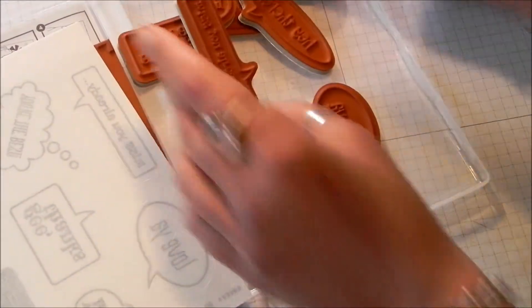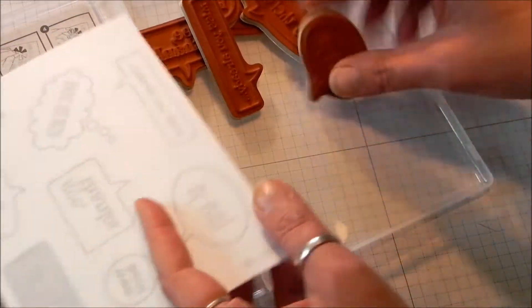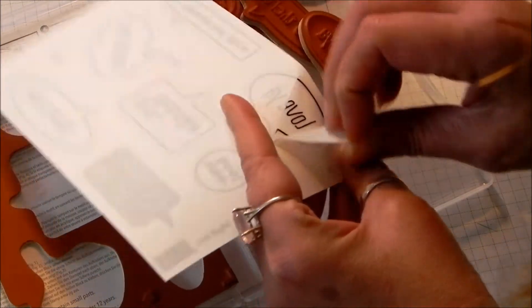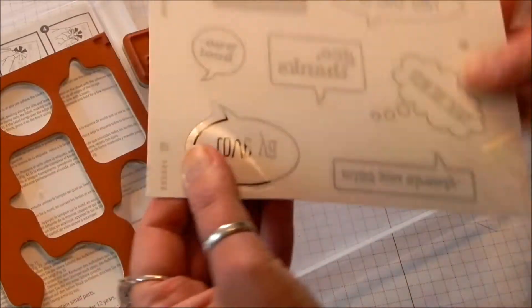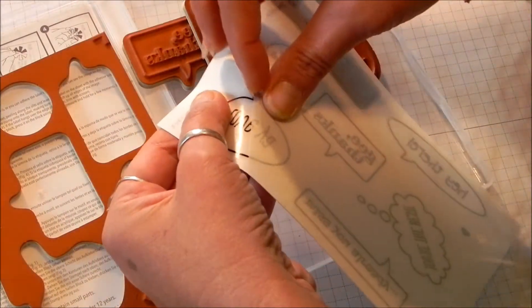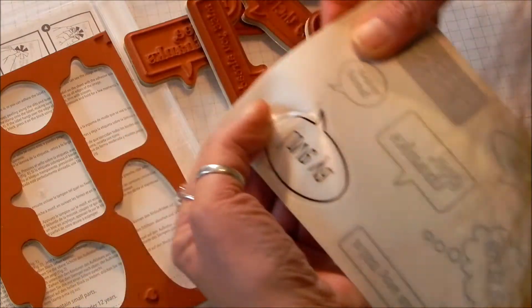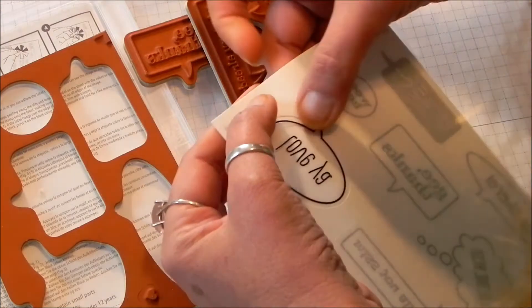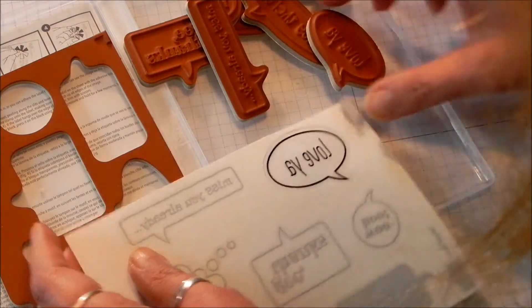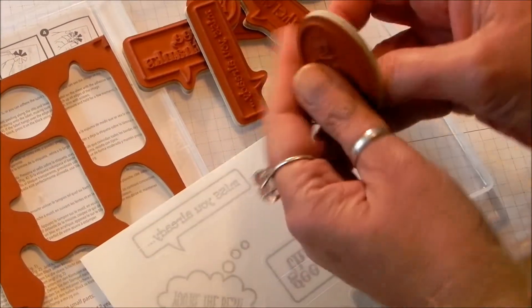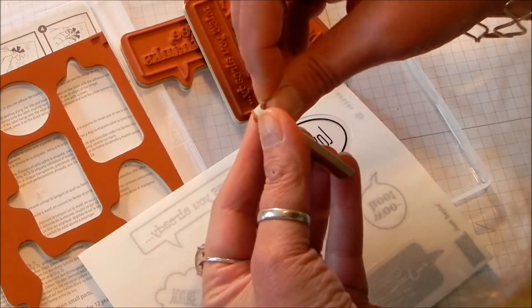Once you have all your stamps punched out, the next thing to do is peel off the backing for the labels for the back of your stamps. They are slit. Just get your nail under there and peel that off. Be careful not to pick up that label because what you're going to want to do now is take off the back of your stamp.